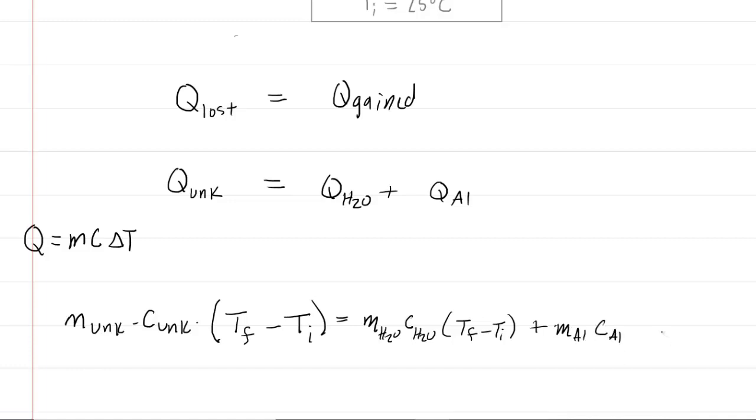For the specific heats of water and aluminum, we're going to need to look those up in a reference table in just a moment. What is important to understand is that the left hand side of this equation is actually going to be a negative value, whereas the right hand side is going to equal a positive value.